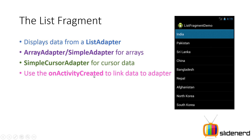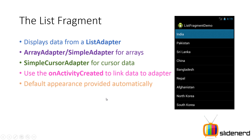The onActivityCreated method tells you that the activity has finished executing its own onCreate method. You need that because it is in the activity's onCreate method where you call setContentView, and the UI has been instantiated. You want to make sure inside your fragment that you access the UI only after it has been fully instantiated by the activity — that is the reason why you use this method.